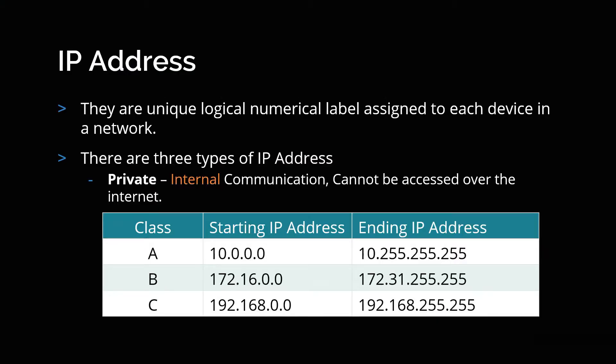So what is an IP address? An IP address is nothing but a logical numerical label assigned to each device in a network. Every device in a network has an IP address — it could be a printer, your mobile phone, your laptop, your EC2 instance, or your instance in which your database is running. Every device is associated with an IP address.